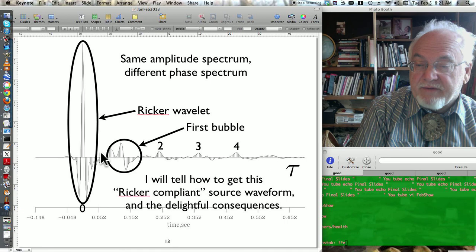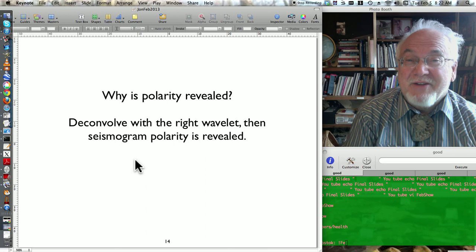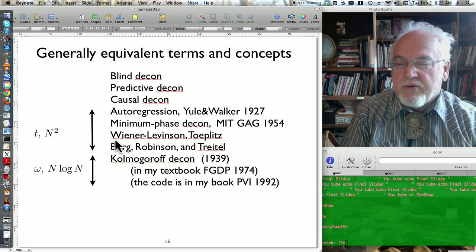So why does it reveal the polarity better? Well, if you deconvolve with the right wavelet, then the seismic polarity is obviously revealed. Industry typically does this stuff in the time domain here, and they have a process that computes in n-squared time. And you may have heard the names Wiener-Levinson or John Burg, Enders-Robinson, Sven Treitel. I typically do this stuff in the frequency domain. It's faster, but that's not the reason.